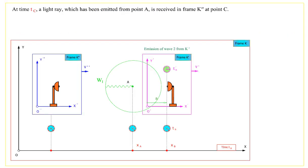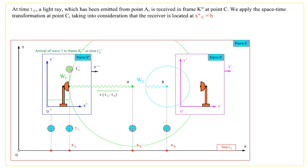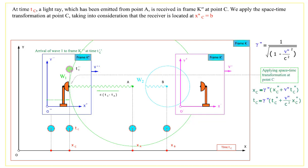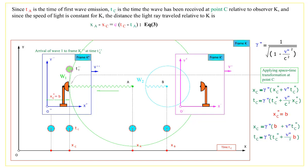At time Tc, a light ray which has been emitted from point A is received in frame K'' at point C. We apply the spacetime transformation at point C, taking into consideration that the receiver is located at X''C equals B. Since T'A is the time of first wave emission, Tc is the time the wave has been received at point C relative to observer K, and since the speed of light is constant for K, the distance the light ray traveled relative to K is X'A minus X''C equals C times (Tc minus T'A).